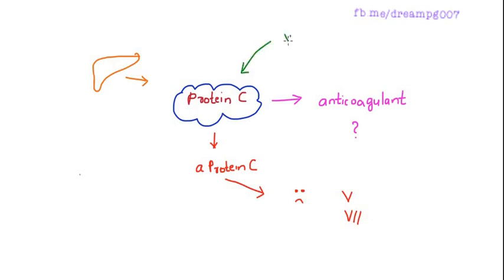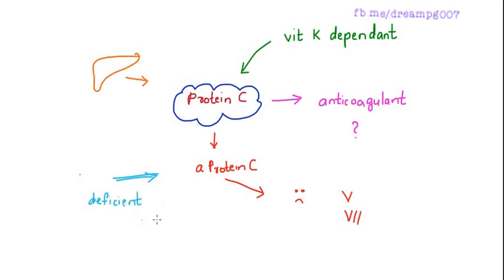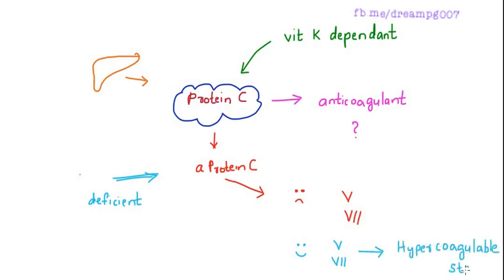When protein C is deficient, this inhibition on clotting factors 5 and 7 does not take place, and that leads to a hypercoagulable state.